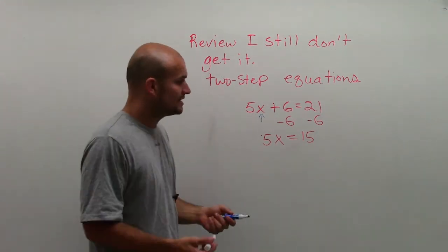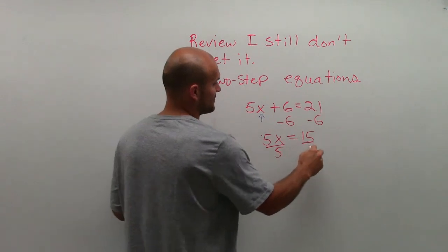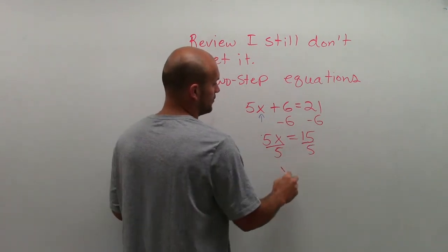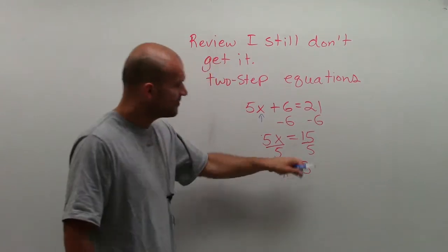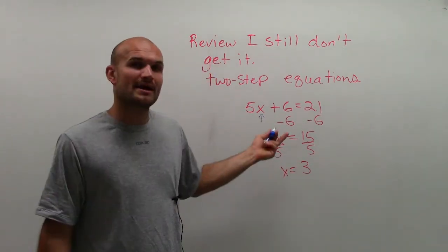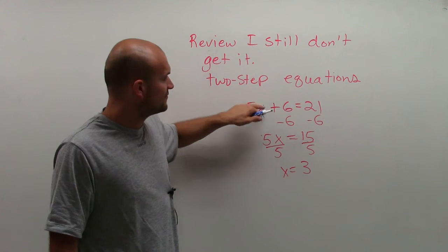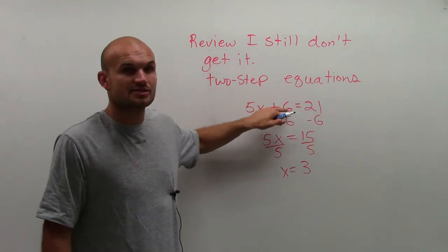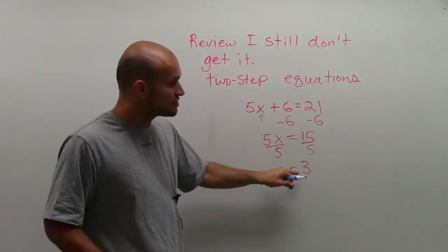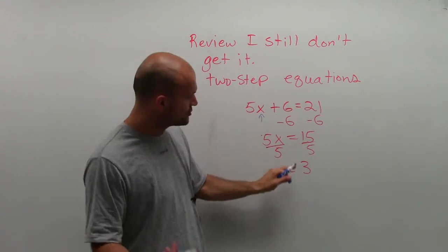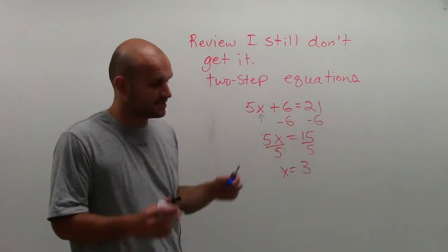The operation I need to undo is multiply by 5, so I divide by 5, which gives x equals 3. You can plug it back in: 5 times 3 is 15, and 15 plus 6 is 21. Since they're equivalent, we know the solution is true — the value of x equals 3 makes this equation true.